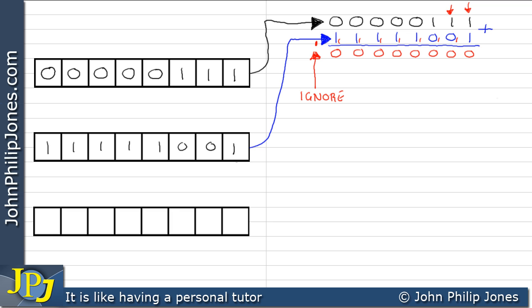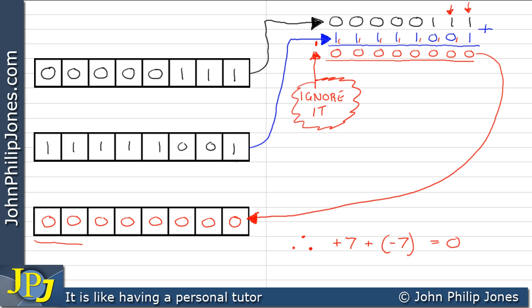And then we ignore this carry, the one that goes into what would be the ninth bit. We ignore it. And if we look at all of the eight bits, and we put them in this register, then we can see in fact that that's 0. Now we know plus 7 plus minus 7 should give us 0. So consequently, we can see this register has got within it 0. So this must be correct.